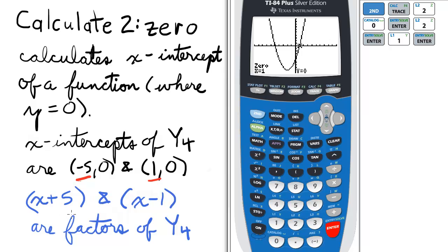So the factors will be x plus 5 from the negative 5 here and x minus 1 from the positive 1 here. So x plus 5 and x minus 1 are the factors of the quadratic function in y4.